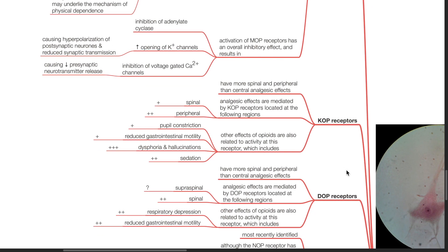Next, we move on to KOP receptors. These receptors have more spinal and peripheral than central analgesic effects. Analgesic effects are mediated by these receptors located at spinal and peripheral regions. Other effects of opioids are also related to activity at the KOP receptor which includes pupil constriction, reduced gastrointestinal motility, dysphoria and hallucinations, and sedation.